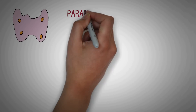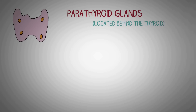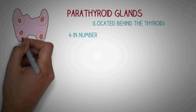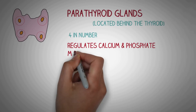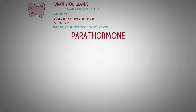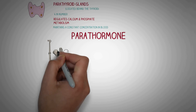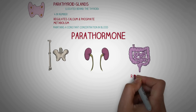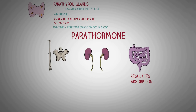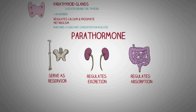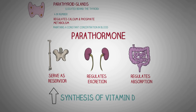The parathyroid gland is located just adjacent to or behind the thyroid gland. We have four parathyroid glands — one behind each of the upper and lower poles of the thyroid. The parathyroid gland has a vital function of regulating a constant concentration of calcium and phosphate in the body. It does so by releasing parathormone, which mainly acts on bone, intestines, and kidneys — regulating calcium absorption through the intestines, calcium excretion through the kidneys, and using bones as a large reservoir to increase or decrease calcium and phosphate concentration in the blood.